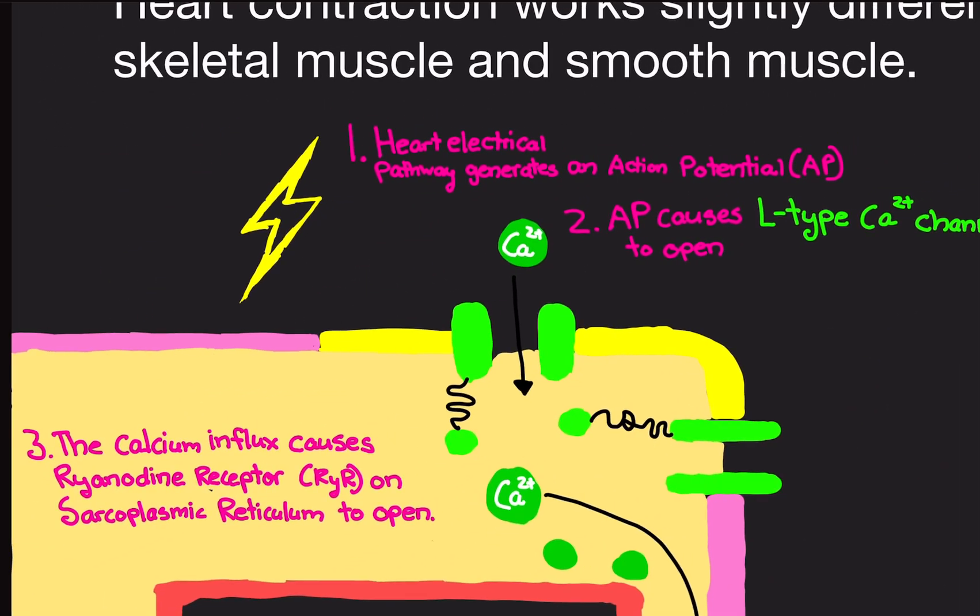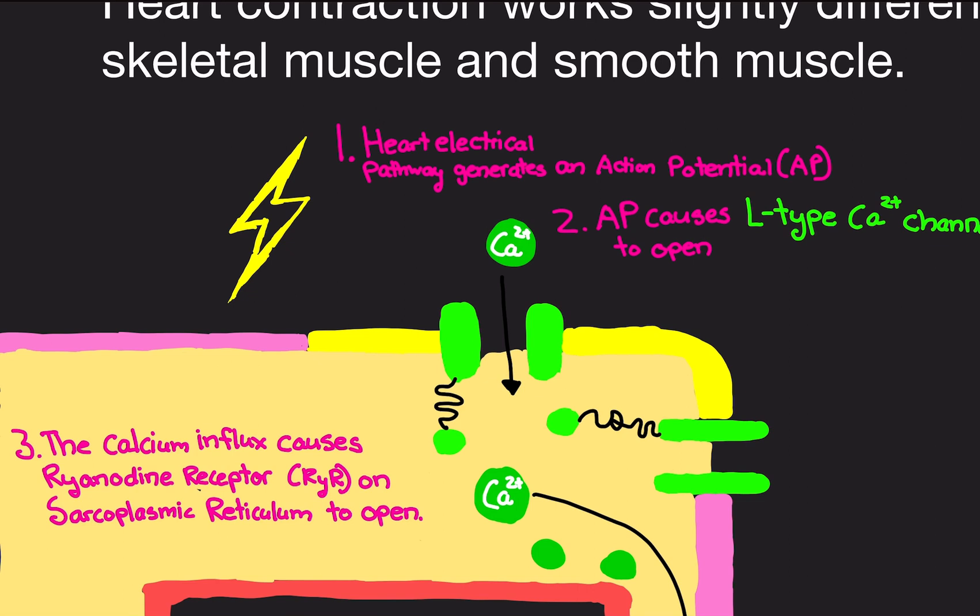What we're trying to do is contract the heart, either the atrium or the ventricle, the atria or the ventricles. That's our goal, and how we do that is with calcium. All we're trying to do is get calcium into the cell to cause a contraction. That's our goal.